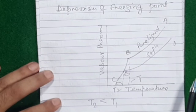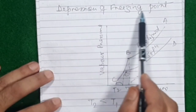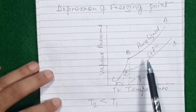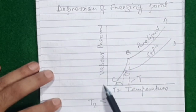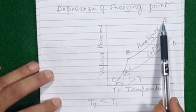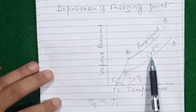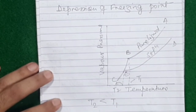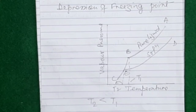That means the solution always freezes at a lower temperature than the pure solvent. What happens to a liquid when you add impurity and convert it into a solution — its freezing point goes down, and that effect is called depression of freezing point. On adding impurity, boiling point increases but freezing point decreases, and this phenomenon of depression of freezing point can be easily explained using the vapor pressure-temperature curve.